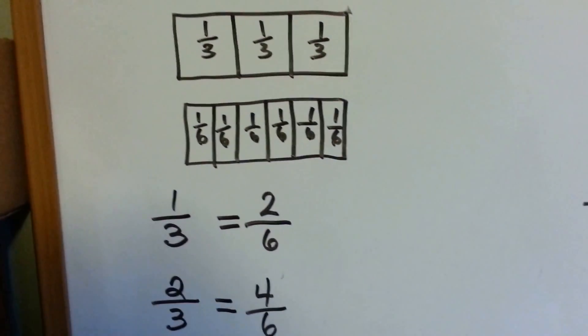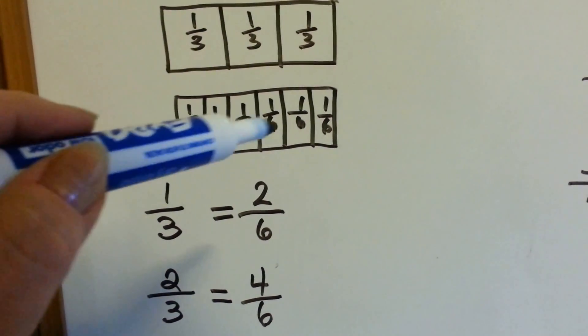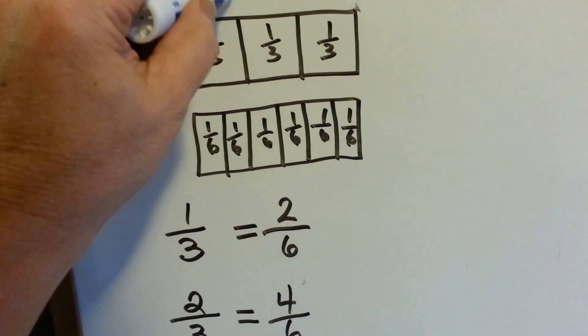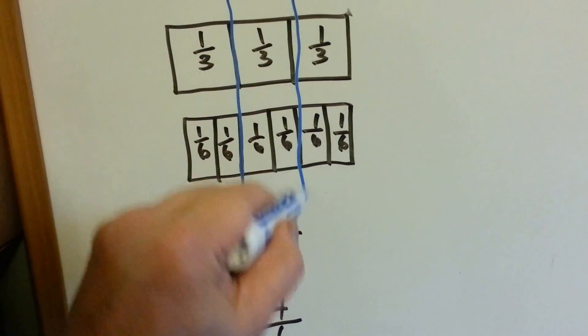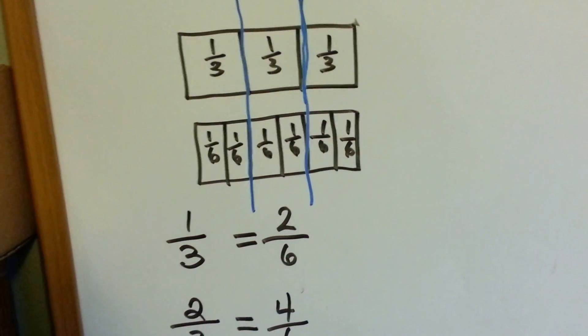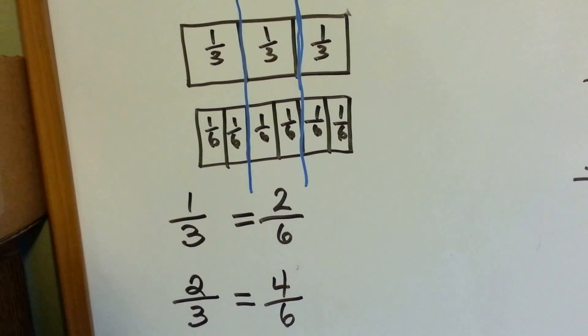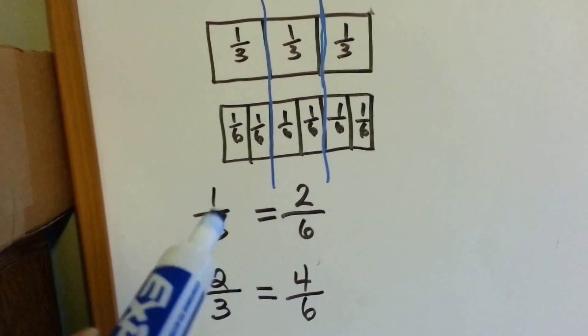Let's look at these. This one's split into thirds, this one's split into sixths. You can kind of see how these lines line up. Two sixths is the same thing as one third. One third is equal to two sixths. They are equivalent fractions.